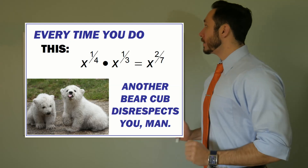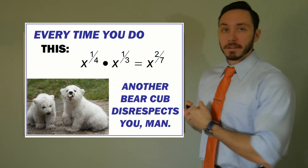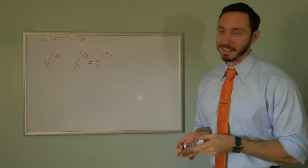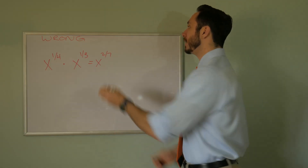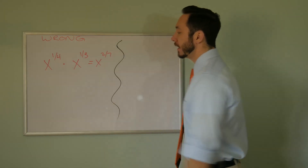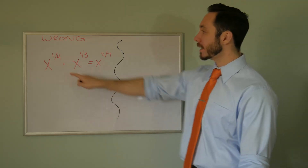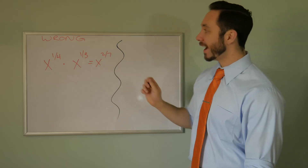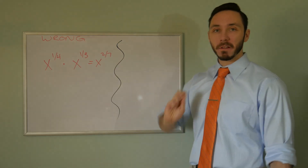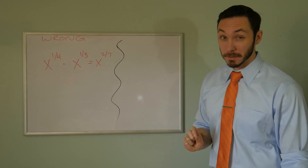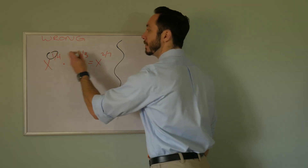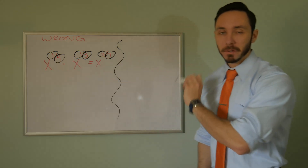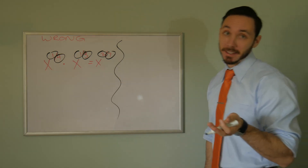Next one: every time you do this, another bear disrespects you. This mistake is quite simple — they just don't know how to add fractions, which is fine because people just forget. They did kind of the right idea: they saw that if you're multiplying these bases, you can add up the exponents. But it turns out one fourth plus one third isn't equal to two sevenths. What they did was one plus one is two, four plus three is seven. Let me show you just how wrong that is.